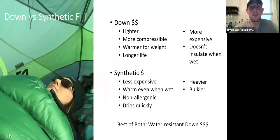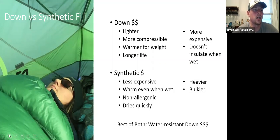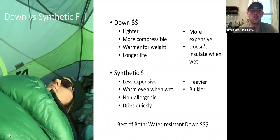Now one of the bigger topics: down versus synthetic fill. Which one should we buy? Starting with down — a down bag could be goose or duck down. This natural insulation provides the lightest and most compact option. Historically, the downfall of down was that it becomes very matted when wet and loses most of its insulation value because it loses its loft. However, many down bags are now washed with a hydrophobic treatment — called 'dry down' — that protects against exactly that.